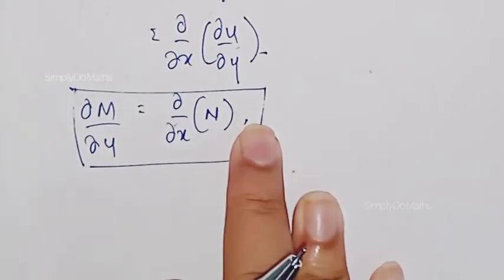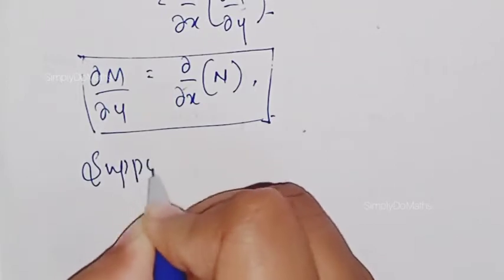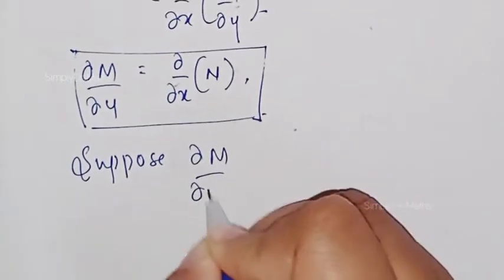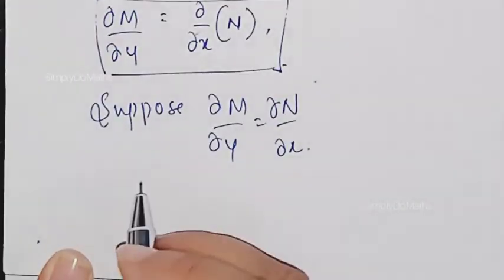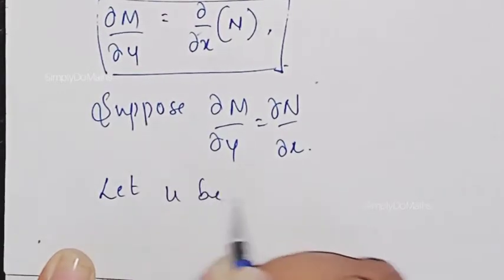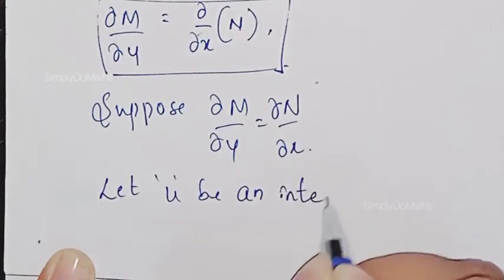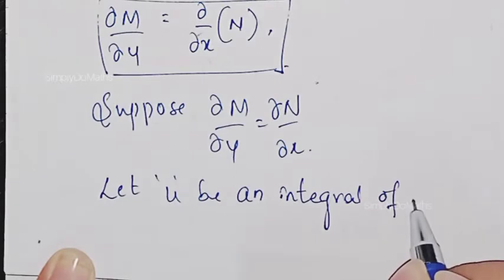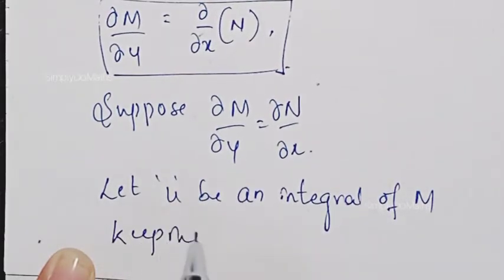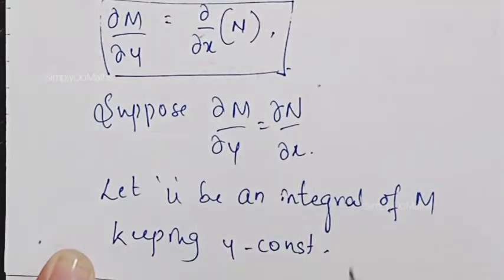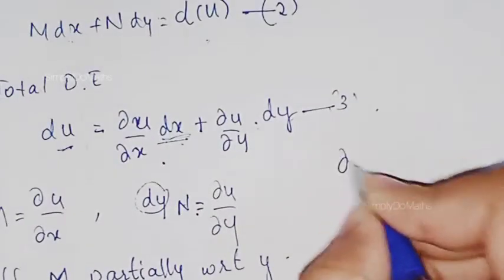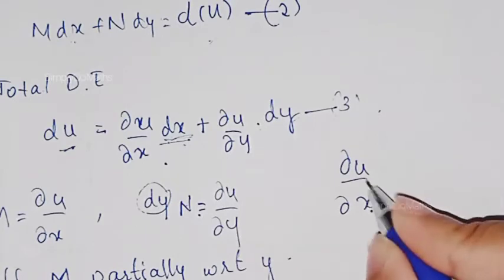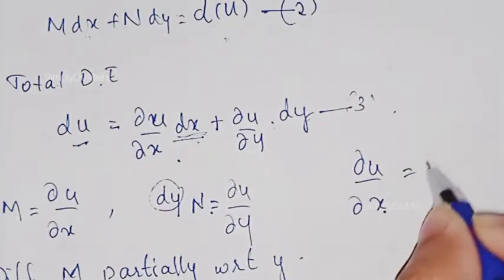Now let us move towards the sufficient condition. Suppose ∂M/∂y = ∂N/∂x. Let u be an integral of M keeping y constant. Let us differentiate u partially with respect to x, giving ∂u/∂x, and the value of ∂u/∂x is M.